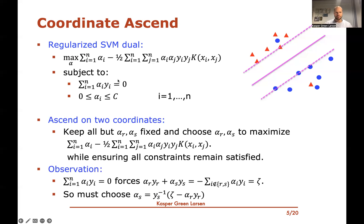If we want to pursue this approach, we can start by looking at the first constraint: the sum of alpha_i y_i equals zero. We can move everything but the terms involving alpha_r and alpha_s to the other side, so we have alpha_r y_r plus alpha_s y_s equals the negative of the sum of the rest, which we call psi. This gives us a fixed formula for alpha_s: for any given value of alpha_r, we have to pick a concrete value of alpha_s to satisfy this constraint.